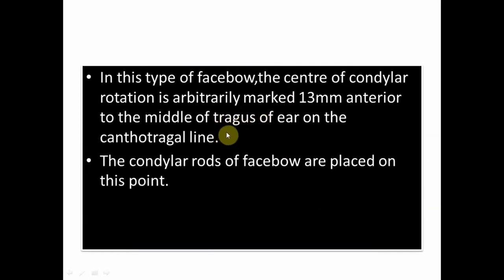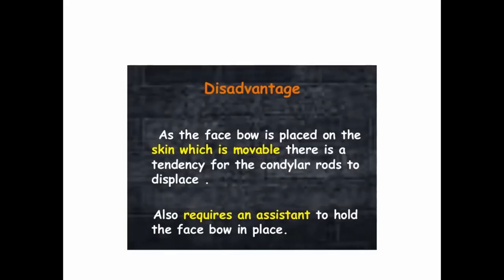On the cantho-tragal line, 13 millimeters anteriorly, a point is marked arbitrarily. In this type, the condylar rods of the facebow are placed on this point. The main disadvantage of the fascia type of facebow is that as the piece is placed on the skin, which is movable, there is a tendency for the condylar rods to get displaced. It also requires an assistant to hold the facebow in place.